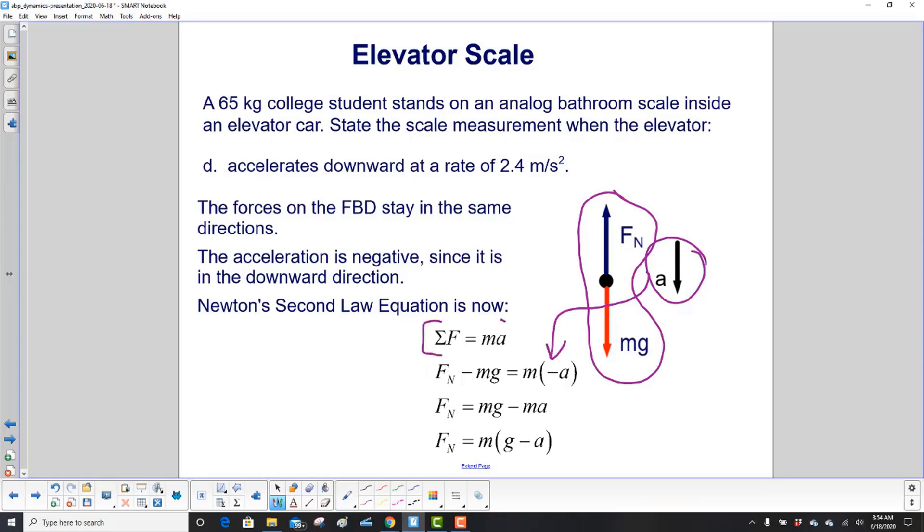We do Newton's second law. The left side of the equation is the same. Normal is up. mg is down. But here we have m times minus a, which is going to be a negative ma. We add mg to both sides. So it cancels out on the left. And it winds up on the right. And then once again we factor out the m.